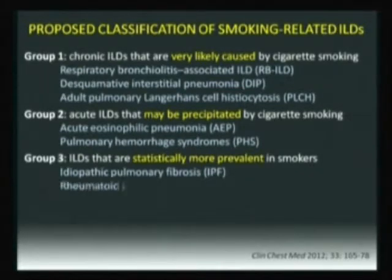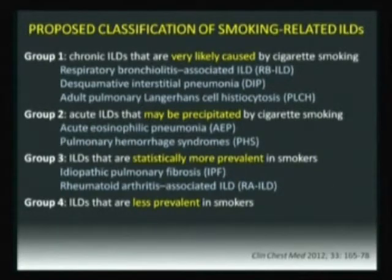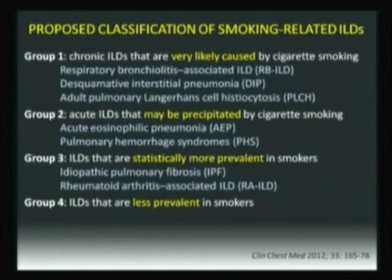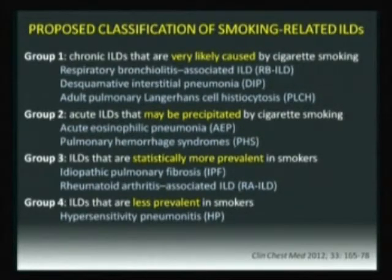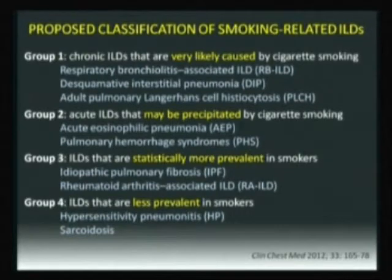IPF is the prototype of group 3, and rheumatoid arthritis associated with ILD is the other one. Then you have group 4 — very intriguing because it's never entered any classification: ILD less prevalent in smokers. In group 4, smoking is actually protecting from getting the disease. These are immune-mediated diseases because smoking is a local immunosuppressor. The two entities are hypersensitivity pneumonitis — much less frequent in smokers — and sarcoid. This is the spectrum of the relationship between smoking and ILD, from being a strong risk factor for the disease to being a strong protective factor.